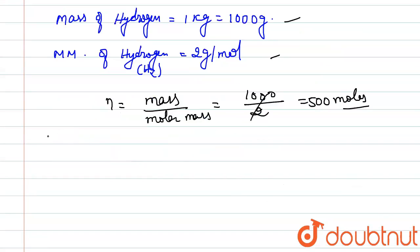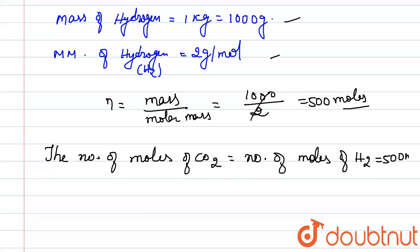Avogadro's law also states that the number of moles of CO2 is equal to the number of moles of H2, and this equals 500 moles as we have calculated.